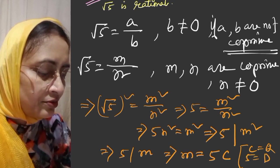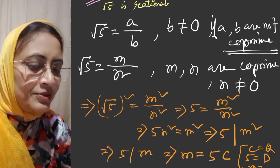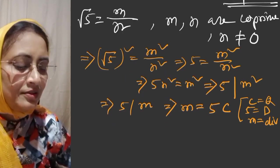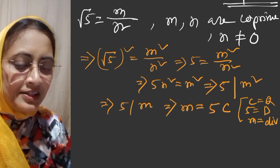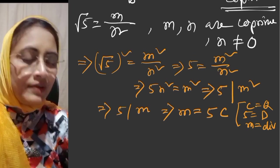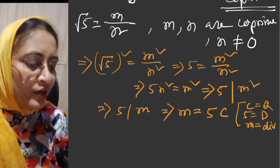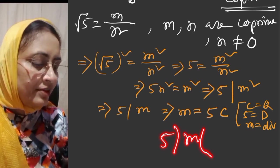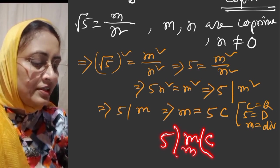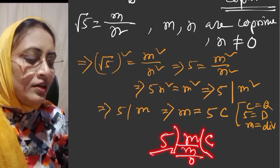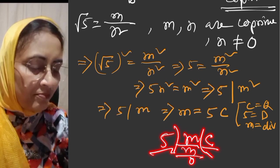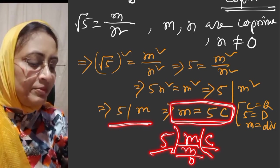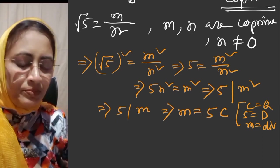So m is equal to 5c. Here, 5 is the divisor, m is the dividend, and c is the quotient. Since 5 divides m, we can write m is equal to 5c.